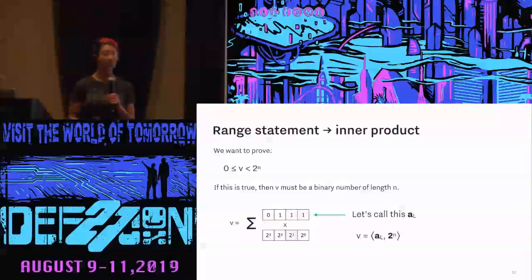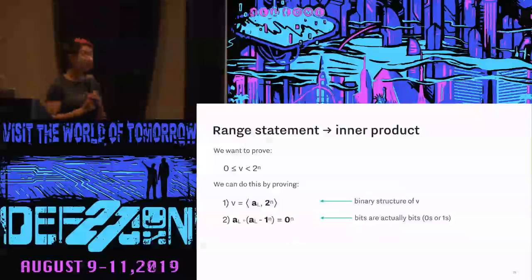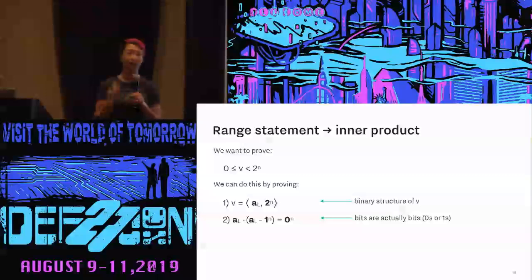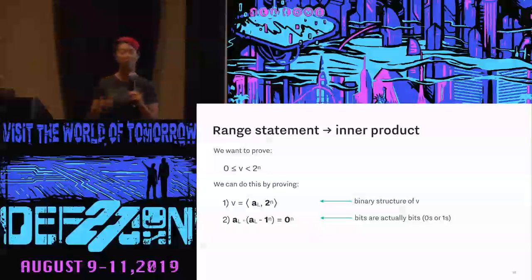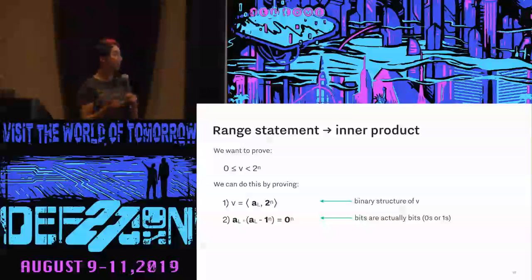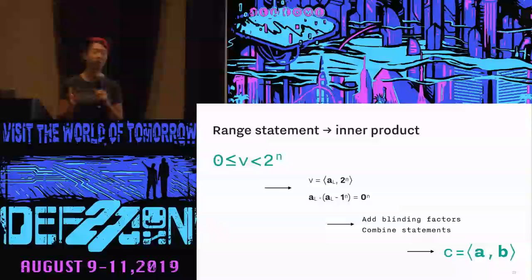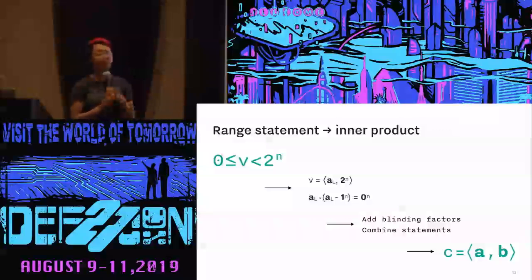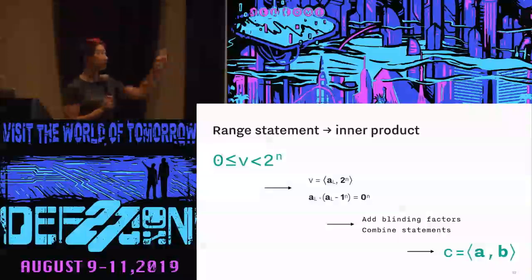We want to guarantee that a sub L is only comprised of zeros and ones. The way we do this is by adding a second statement: a sub L times (a sub L minus one) should equal zero for every index in a sub L. This will only be true if a sub L is comprised of zeros and ones — if it had 100 at an index, it'd be 100 times 99, which is not zero. This checks that the bits are actually bits. We continue to add these checks and different statements, add some blinding factors to keep secrets like V and a sub L secret, then combine them with tedious math rearranging — and we arrive at an inner product argument C equals the inner product of A and B, which is true if and only if V is in range with very high probability.